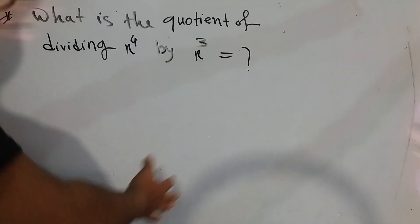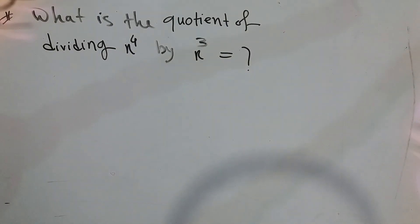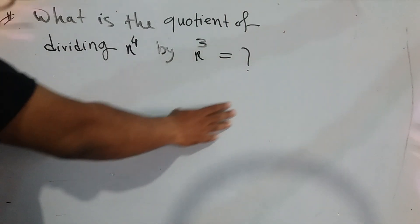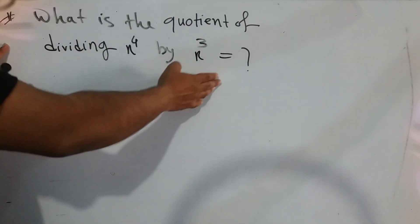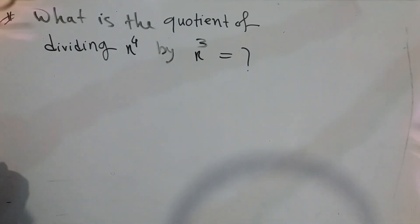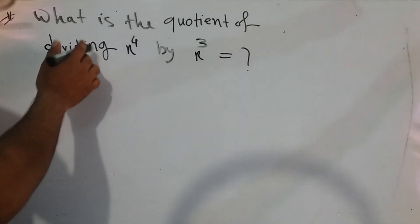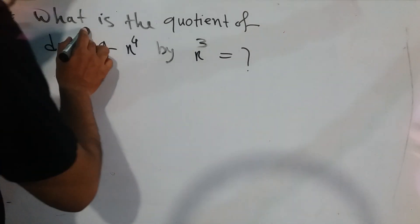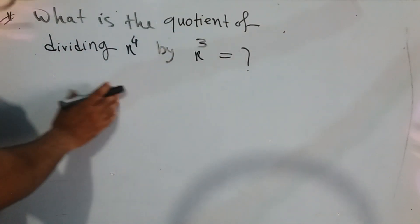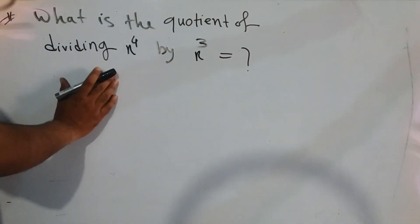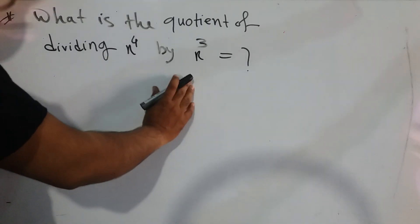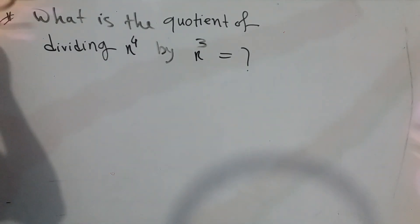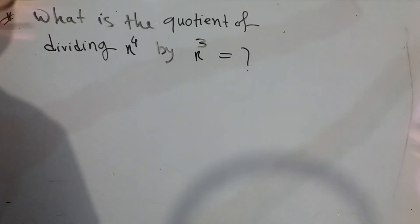We are back again, following this board and this math figure. The question is: what is the quotient of dividing x to the power 4 by x to the power 3? So the math problem to solve is x⁴ ÷ x³ = ?